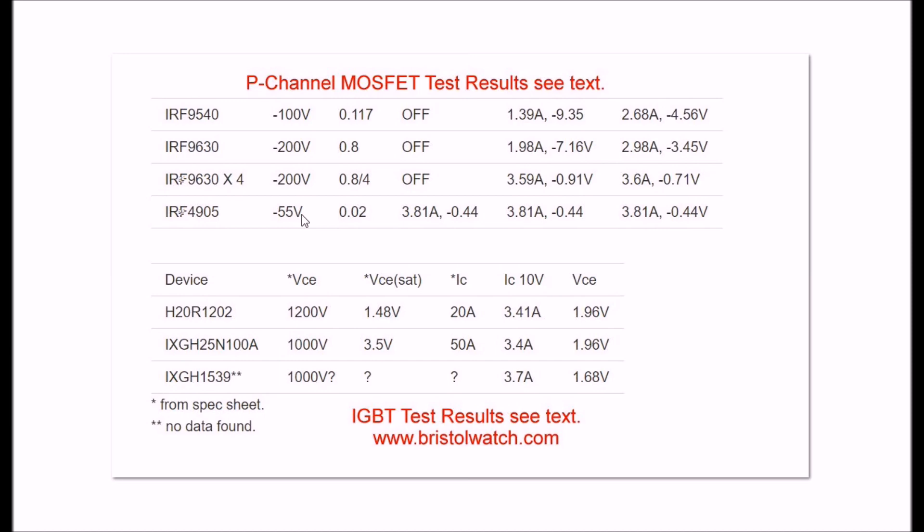You'll find out when I do the video on N-channel MOSFETs that the ultra low resistance MOSFETs are also low voltage. You won't find a 0.02 ohm 200 volt device. If you need something greater than 55 volts you're going to have to parallel things like the 9630 which works great and I'll show you how I parallel them.